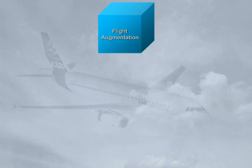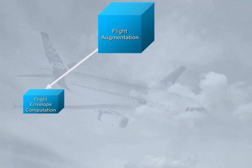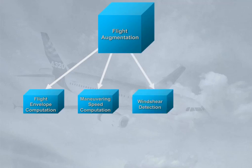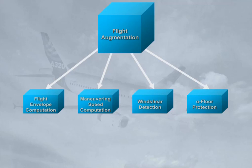The flight augmentation, FAC, part of the FMGS provides flight envelope computations: minimum speed such as VLS, or maximum speed such as VMO or VFE. Maneuvering speed computation — for example, best speed to fly in a given flap configuration. Wind shear detection, which triggers the wind shear warning. Angle of attack protection, alpha floor protection, triggered when the aircraft's angle of attack is above a predetermined threshold. Note the FAC has various yaw functions such as yaw damping, turn coordination, and others, which will be reviewed in the flight controls chapter.